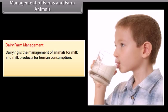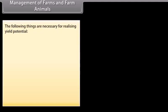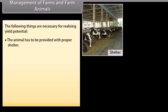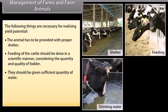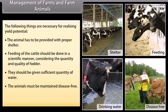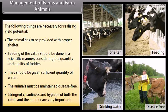Management of farms and farm animals — Dairy farm management: Dairying is the management of animals for milk and milk products for human consumption. Milk yield is dependent primarily on the quality of breed. The animal has to be provided with proper shelter, feeding of cattle should be done in a scientific manner considering quantity and quality of fodder, sufficient water must be provided, animals must be maintained disease-free, and stringent cleanliness and hygiene of both the cattle and handler are very important.